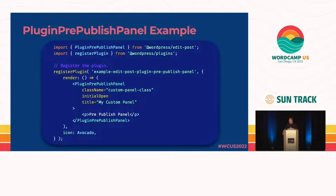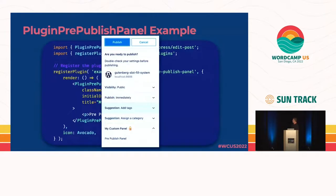The code to render that would look like this — we're just pulling in the appropriate SlotFill for the PluginPrePublishPanel and wrapping our content in it. When that renders, it looks like this with my little avocado down there at the bottom.